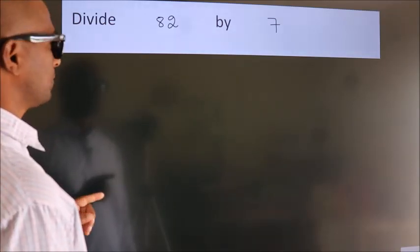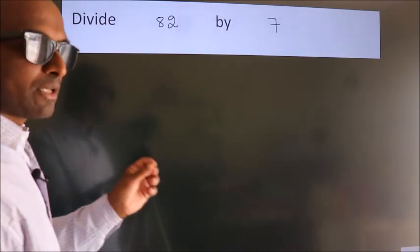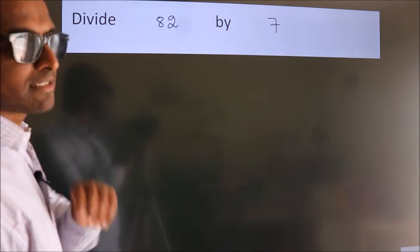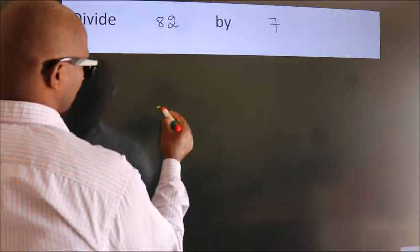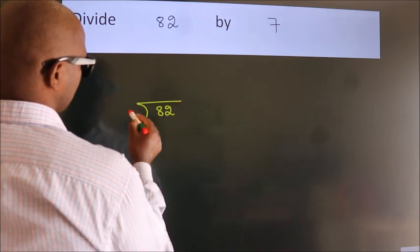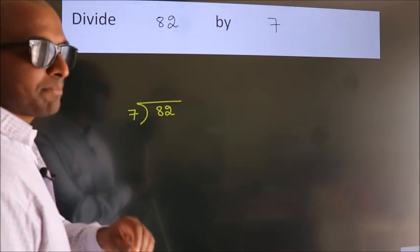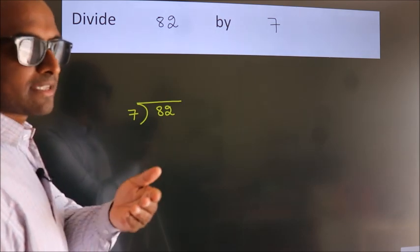Divide 82 by 7. To do this division, we should frame it in this way. 82 here, 7 here. This is your step 1.